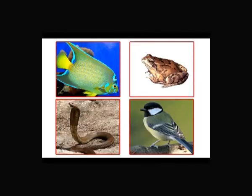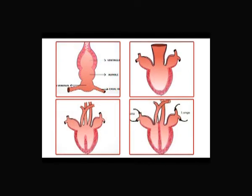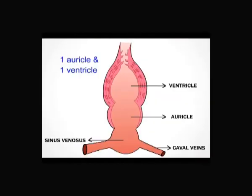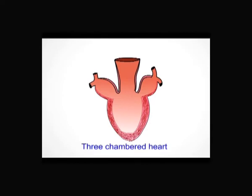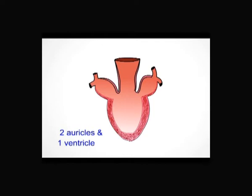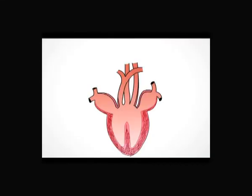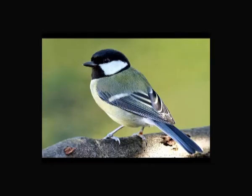The circulatory system has undergone drastic evolutionary changes in vertebrates due to structural changes in the heart. The heart is two-chambered — one auricle and one ventricle — in fishes, the primitive vertebrates. This evolved into a three-chambered heart in amphibians — two auricles and one ventricle. In reptiles the heart is three-chambered with two auricles and one incompletely divided ventricle, and finally into a four-chambered heart — two auricles and two ventricles — seen in birds and mammals.